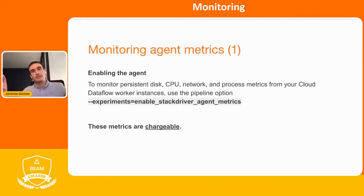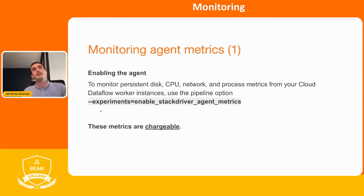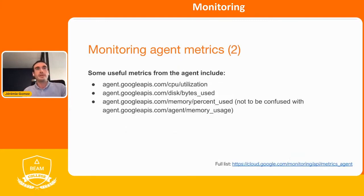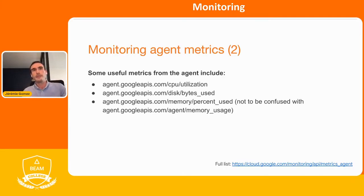There's also something transversal to GCP called monitoring agent metrics. The monitoring agent is a small agent you can install to get more metrics about your workers. In Dataflow, it's easy to enable — you just pass the flag enable_stackdriver_agent_metrics. However, the metrics I described before are free, but these ones are not. With agent metrics you can look at CPU utilization, disk IO, and also access memory metrics even if your machine is not E2.